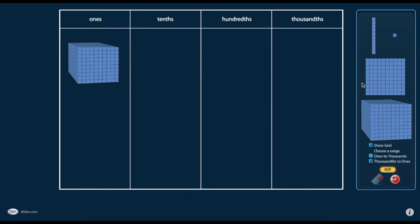Because 10 flats equal one cube, we'll use our flats to represent the tenths, the rods will represent our hundredths, and our units will represent our thousandths. Using these base 10 blocks, we can create models for decimal numbers. Let's try one.